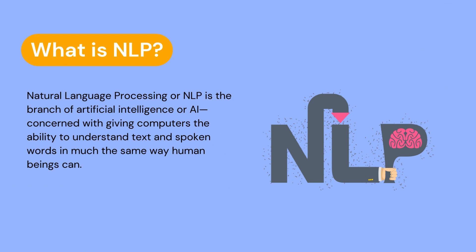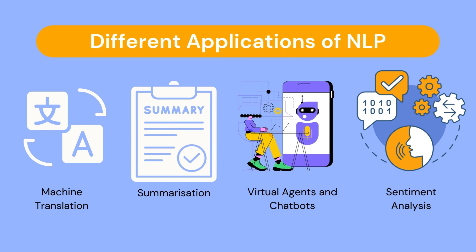So what is natural language processing? Natural language processing, or NLP, refers to the branch of computer science — and more specifically artificial intelligence — that is concerned with giving computers the ability to understand text and spoken words the same way humans can. There are many different applications, some of which are machine translation such as Google Translate, text summarization, virtual agents and chatbots such as Apple's Siri and Amazon Alexa, and sentiment analysis.